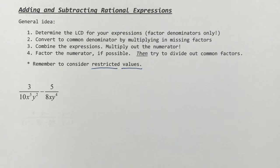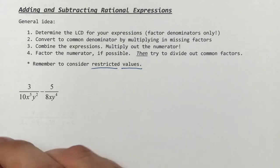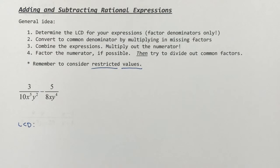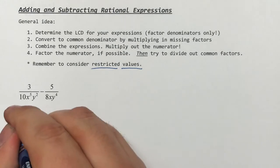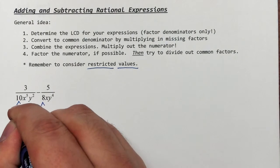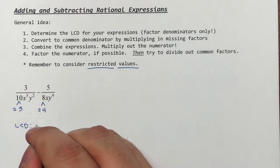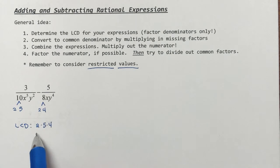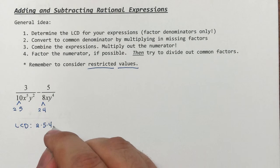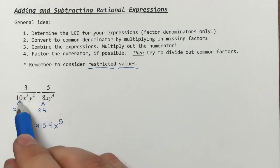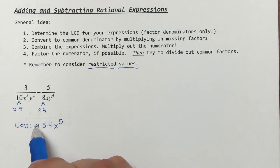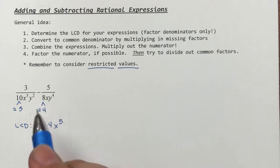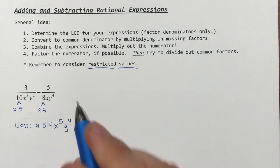I have 3 over 10x⁵y² minus 5 over 8xy⁴. I need to figure out my LCD. Looking at these denominators, 10 and 8: 10 is 2 times 5, and 8 is 2 times 4, so I need a 2, a 5, and a 4 — in other words, 40. For x⁵ and x, I need the higher power of x, since each denominator has to be a factor of the LCD. So I need x⁵. And with y² and y⁴, I need y⁴, the larger power. So my LCD is 40x⁵y⁴.